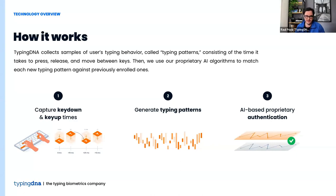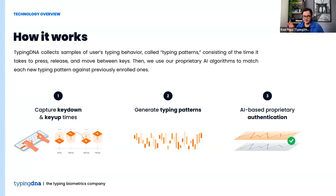A little bit about how the technology works: we look at the timing between keys and how long you press each key. Whenever you type on your keyboard, it doesn't matter what language — English, Spanish, or Chinese — what matters is how long you keep each key pressed and how much time it takes to move to the next key. We build typing patterns based on how you type your username, password, and pretty much anything. Based on that, we authenticate by comparing against previous samples recorded in previous sessions, and we can use that to authenticate you against your previous logins.